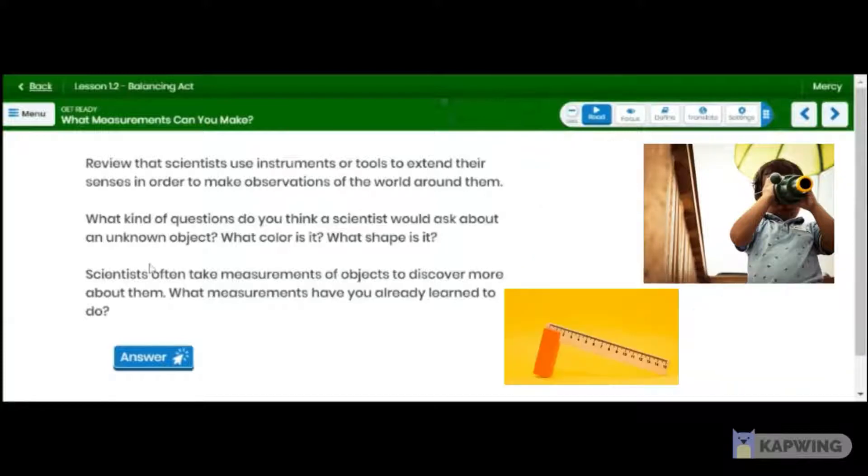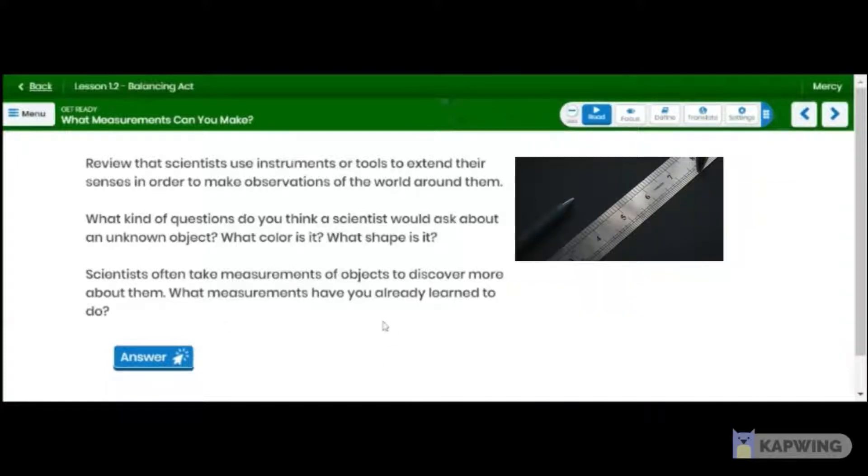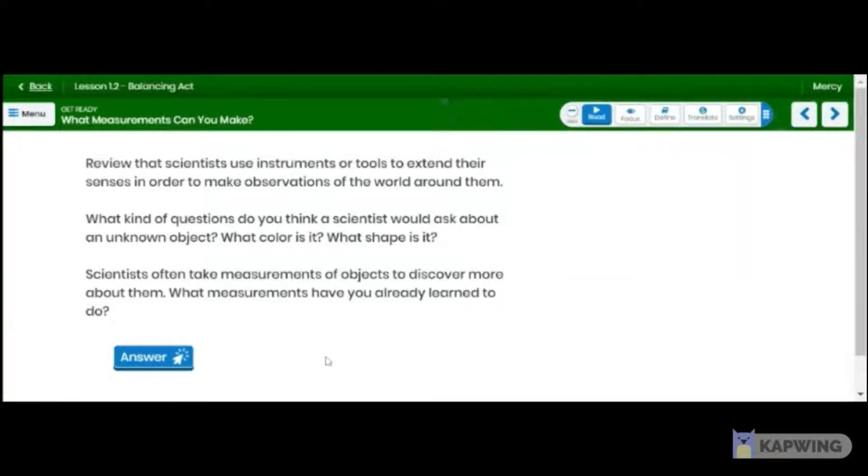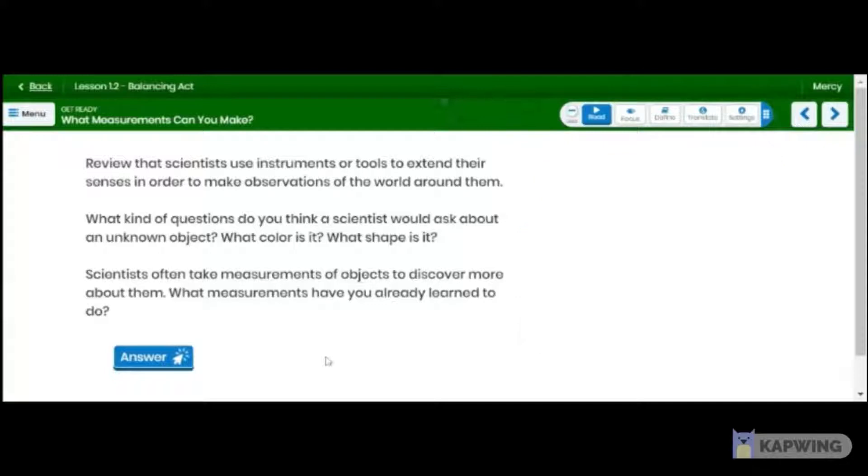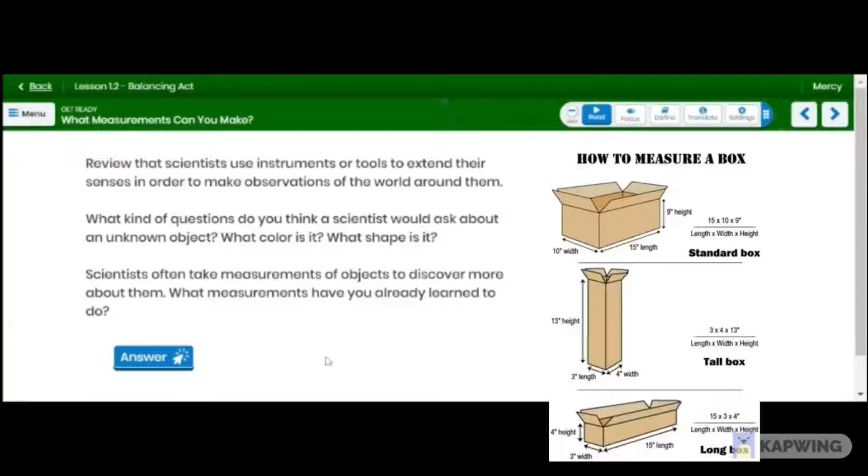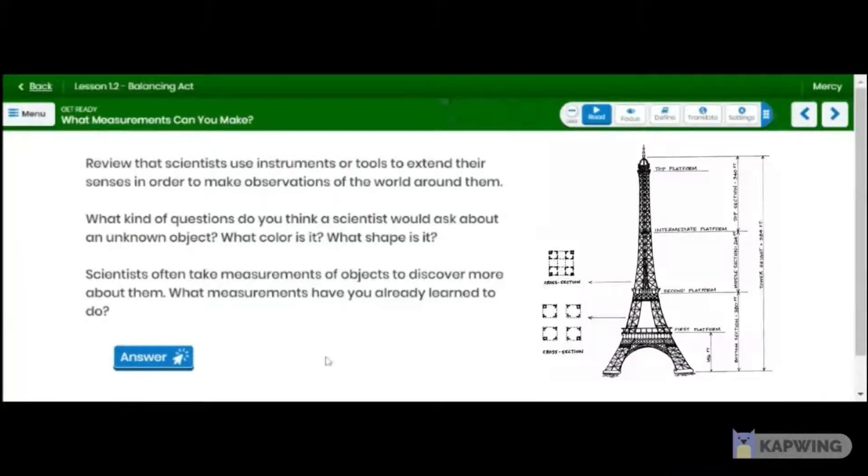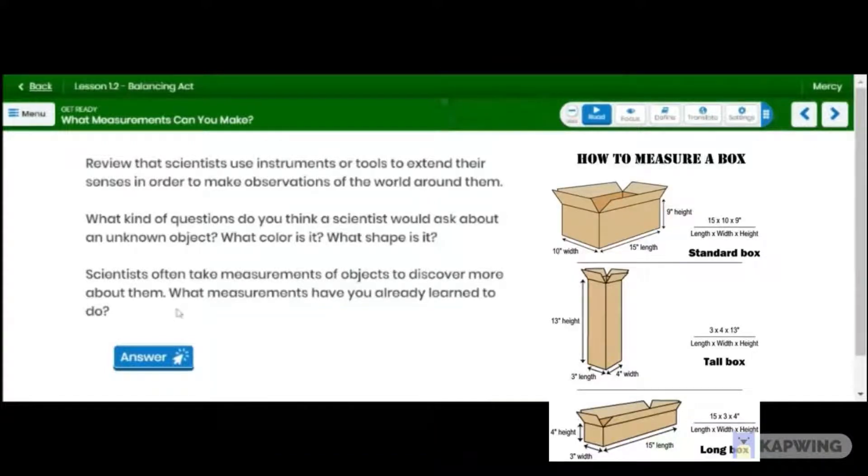Yeah. Scientists also take measurements of objects to discover more about them. Now, what measurements have you already learned to do? How to use a ruler. How to use a pan balance. Very good. So what measurements do you make with a ruler? How high and how long. So when you're measuring how high something is, you're measuring the height of that object. And when you measure how long something is, you're measuring the length of that object.